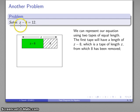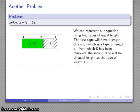And again, the tape diagram corresponds to the equality in length of two tapes. z minus 8, here it is. And 12 must be a tape of the same length. So I'll put that in there.